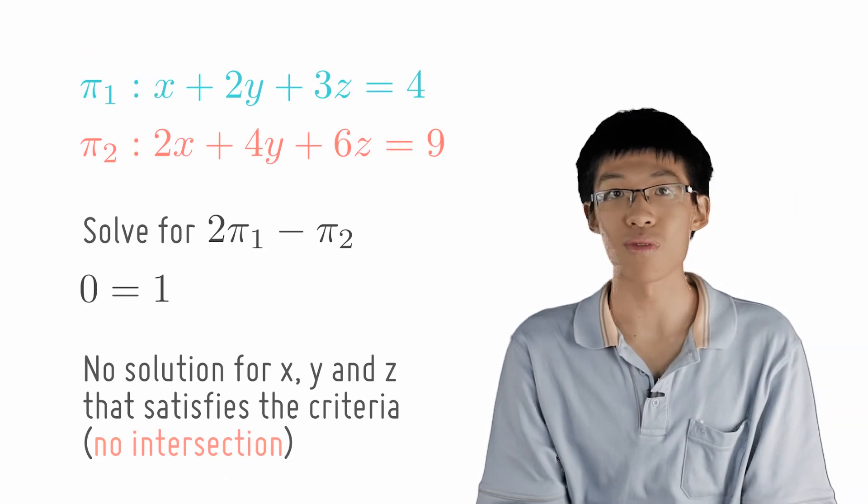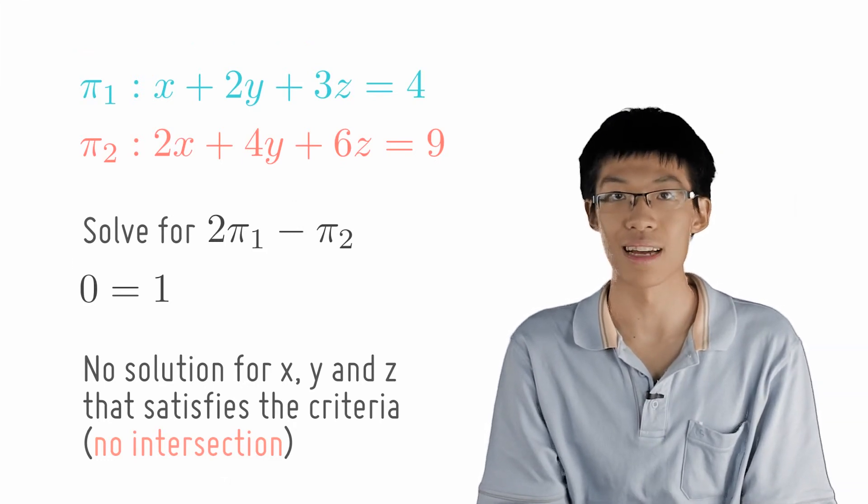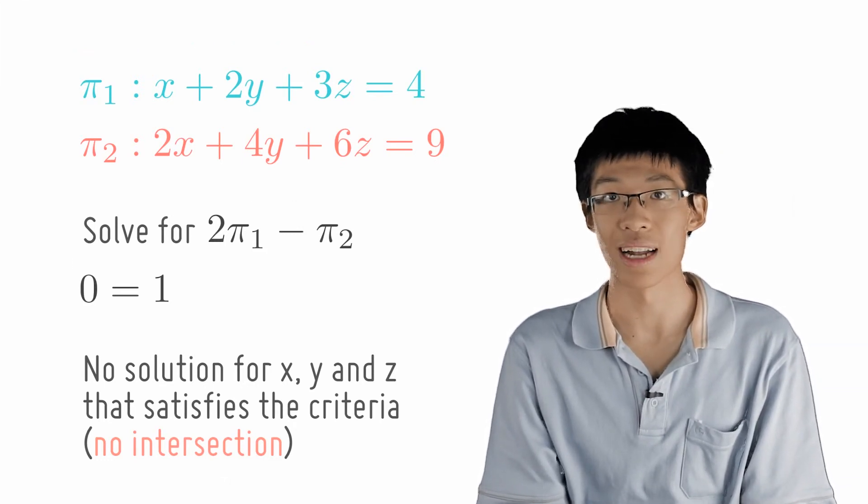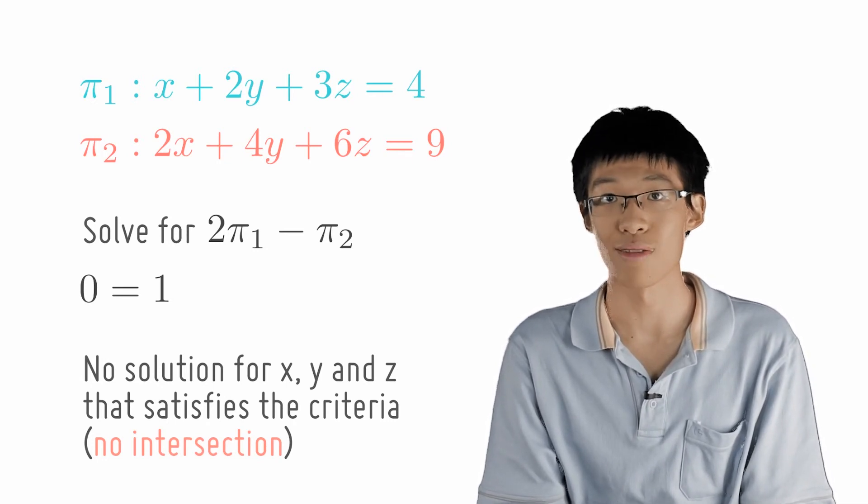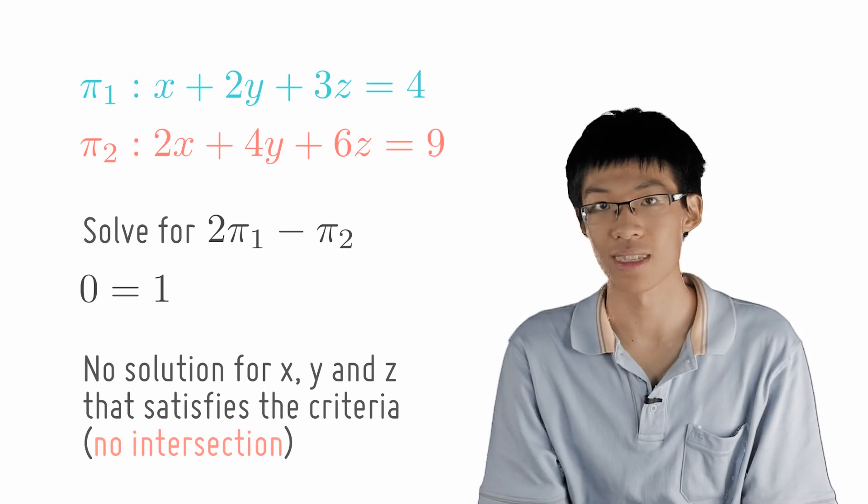So, no matter what x, y and z that we choose, 0 equals to 1 cannot be satisfied. So, there is no x, y and z that satisfies the criteria of being an intersection point.